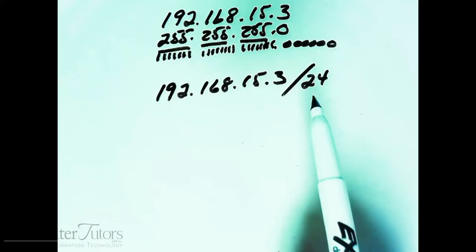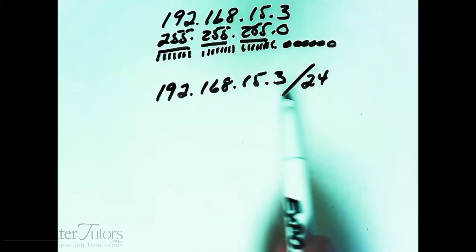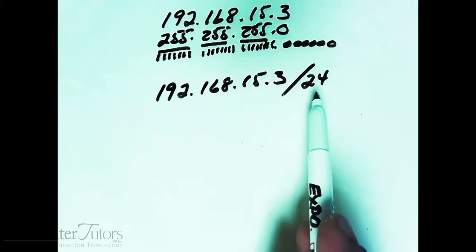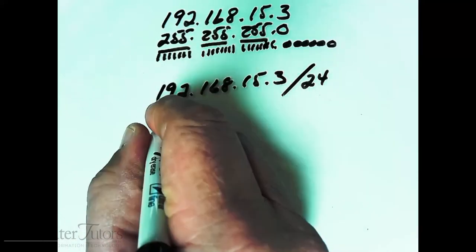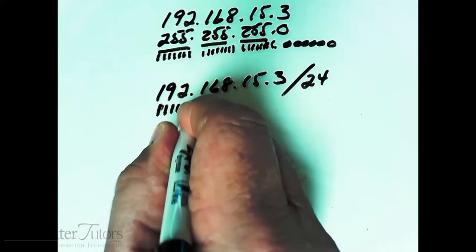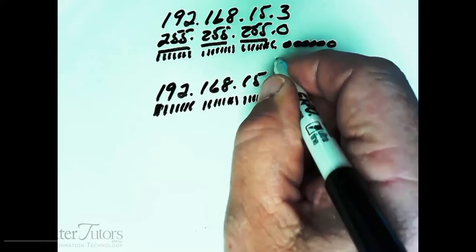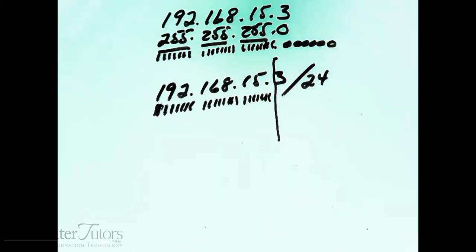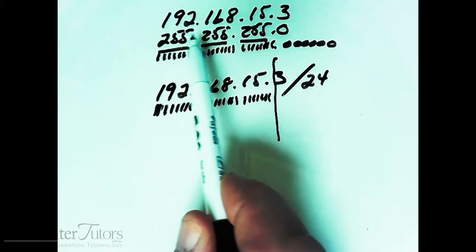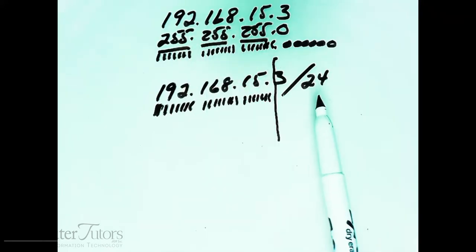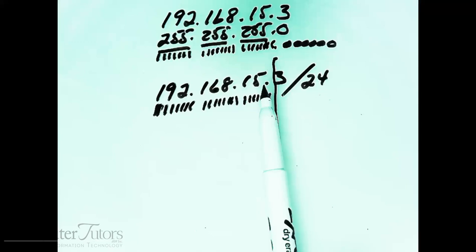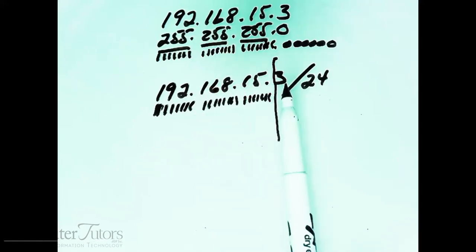When I talk to students, they recognize the IP address but aren't sure about the slash 24. Well, the slash 24 is shorthand for the subnet mask — it's telling the computer to turn on 24 on-bits, which equals 255.255.255.0. So in today's world, you'll either see the subnet mask written out as 255.255.255, or written as slash 24. From the computer's point of view, it means exactly the same thing: the network address is 192.168.15 and the host address is 3.